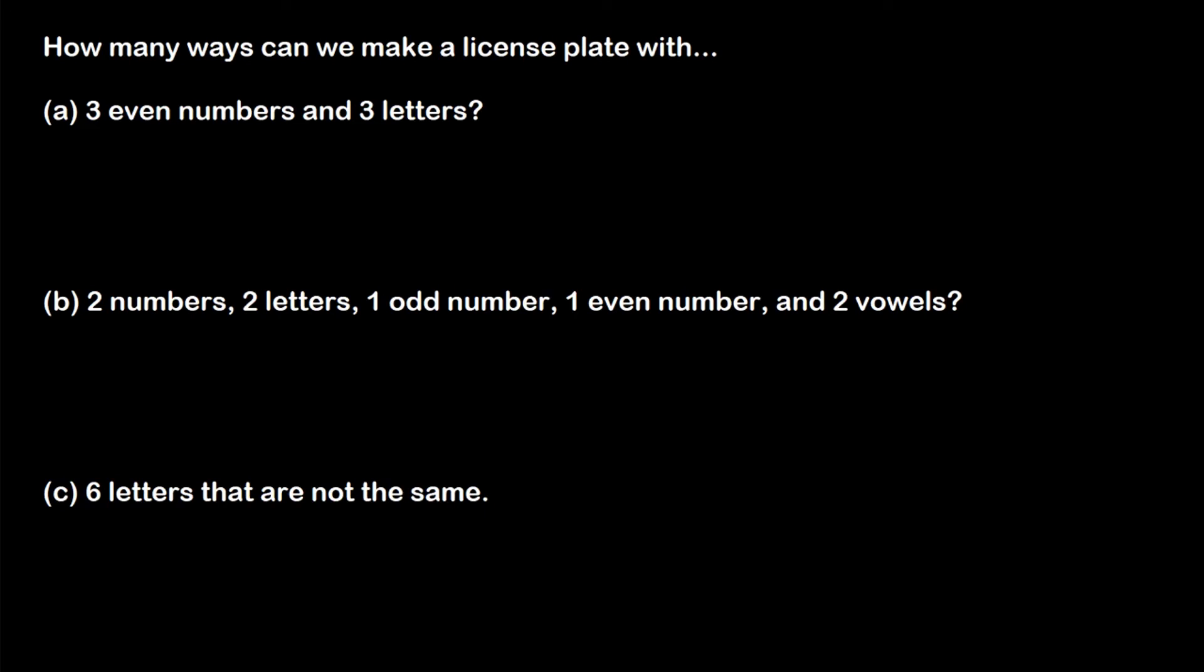So three even numbers. Well, the even numbers between zero and nine are zero, two, four, six, and eight. So for each of the even number spots, we have five different choices. So we have five ways to pick the first number, five ways for the second, and five ways for the third.